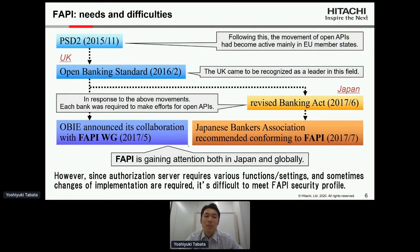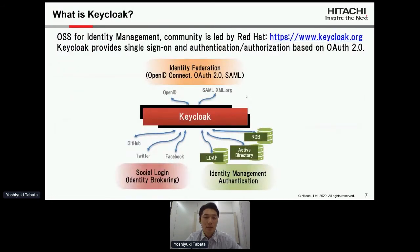While FAPI was gaining attention, at the same time some difficulties began to be recognized. For example, to meet the FAPI security profile it requires various functions and settings for the authorization server. We need to solve these difficulties. So next: what is Keycloak?